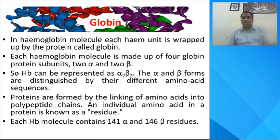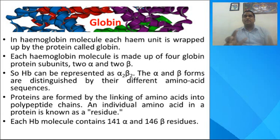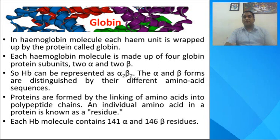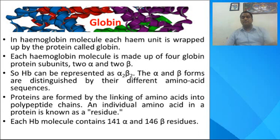Globin is a protein surrounding the heme unit, providing a protective cover to it. Each hemoglobin molecule is made up of four globin protein subunits — two of alpha form and two of beta form — which is why hemoglobin is represented as α₂β₂. The alpha and beta forms can be distinguished by their different amino acid sequences. Each hemoglobin molecule contains 141 alpha residues and 146 beta residues.